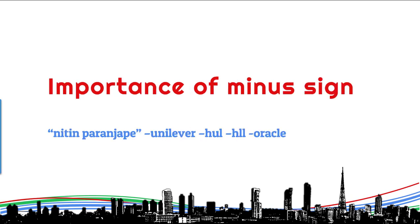The second thing which is commonly not known is you can exclude terms. For example, in my case my name is Nitin Paranjpe, but there are other Nitin Paranjpes who are much more famous than I am. So I have to remove their references by putting a minus key. Minus means all the items or web pages where these words do not appear.